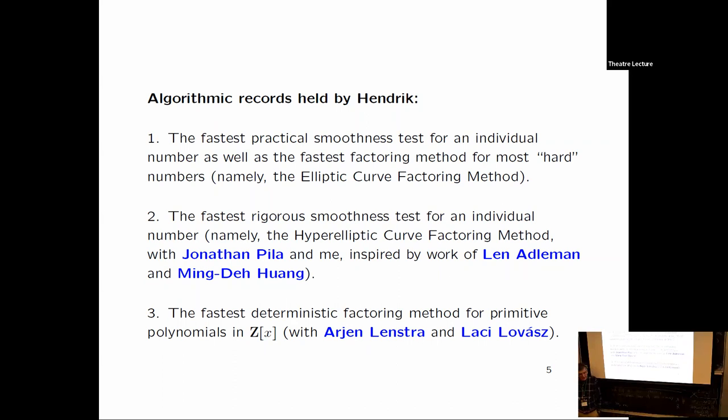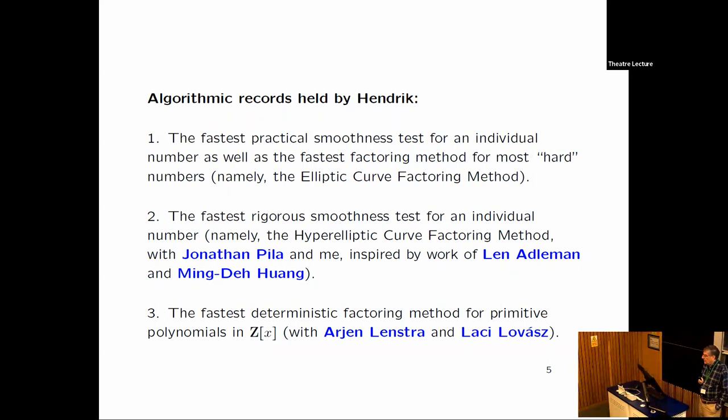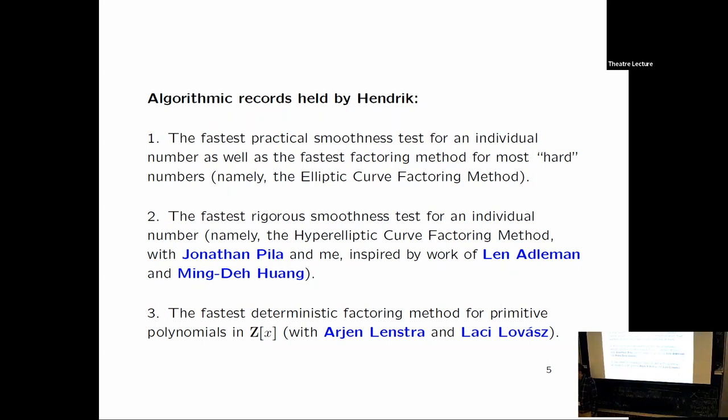So here are some records held by Hendrik. You can ask for a smoothness test for an individual number. Given a big number, is it smooth or not? Well, you've got to factor it. What's the best factoring algorithm if the number wants to be smooth? And that's Hendrik's elliptic curve method. Now that's a heuristic method. If you want the fastest rigorous smoothness test, this is in a few papers that I have with Hendrik and Pila, and it's inspired by work of Adelman and Ming-Deh Huang, who invented this method as a primality test.